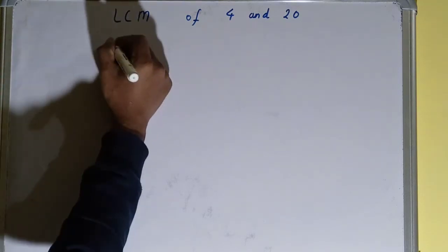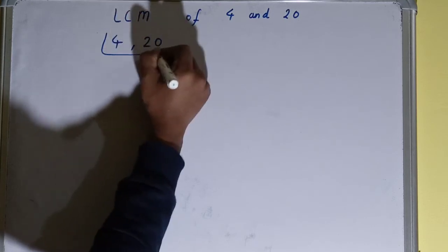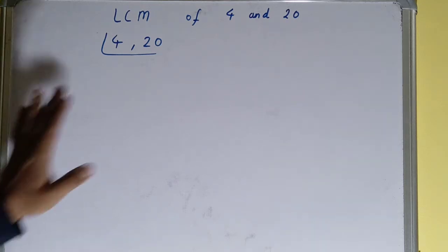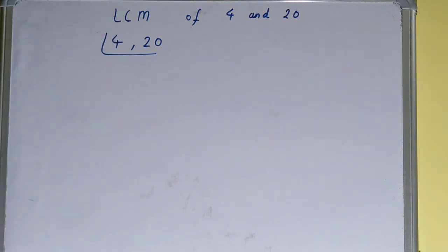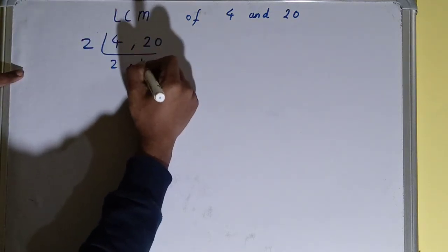To find it out, you first need to write both the numbers like this: 4 comma 20. The next thing you need to do is start with the lowest prime number we have, that is 2. If we check, both numbers are divisible by 2, so divide it. We will be getting 2 comma 10.